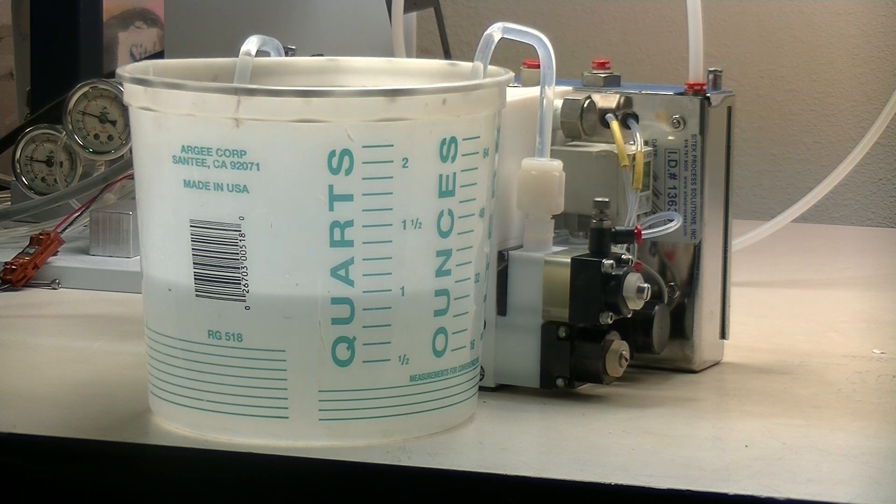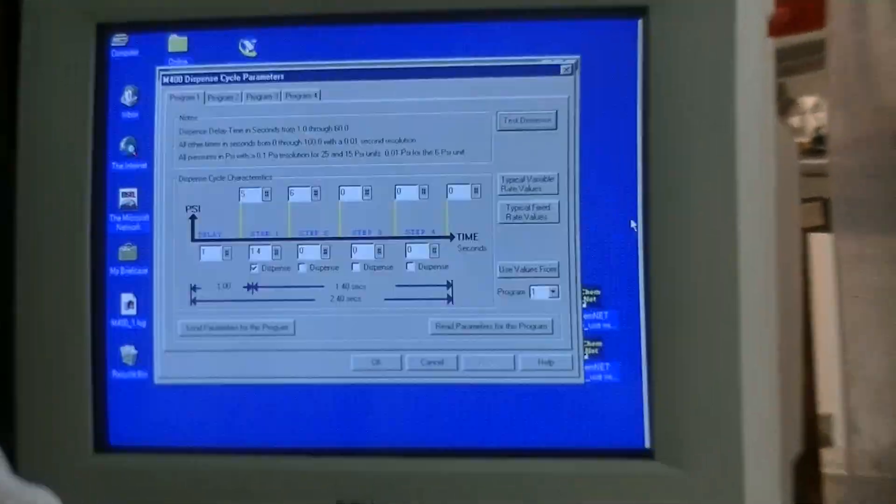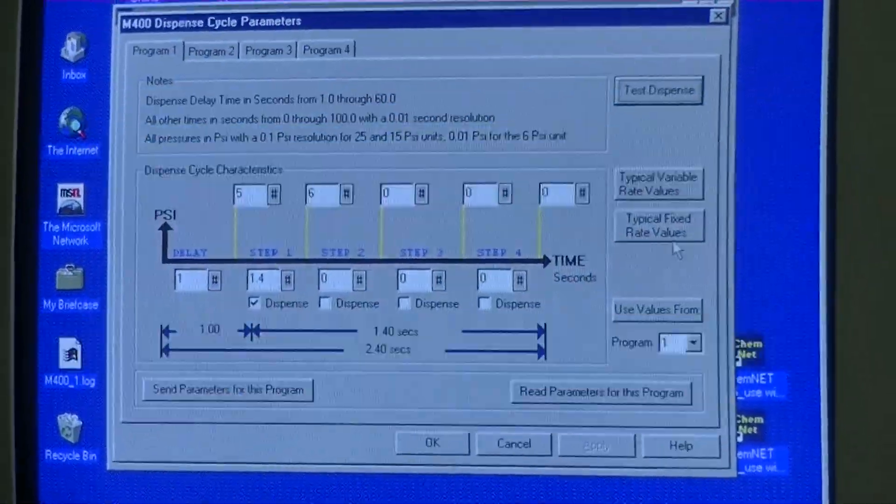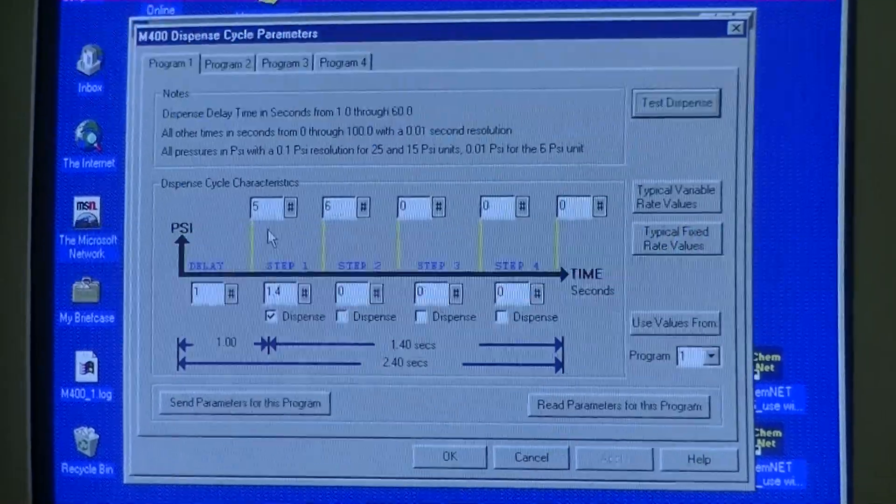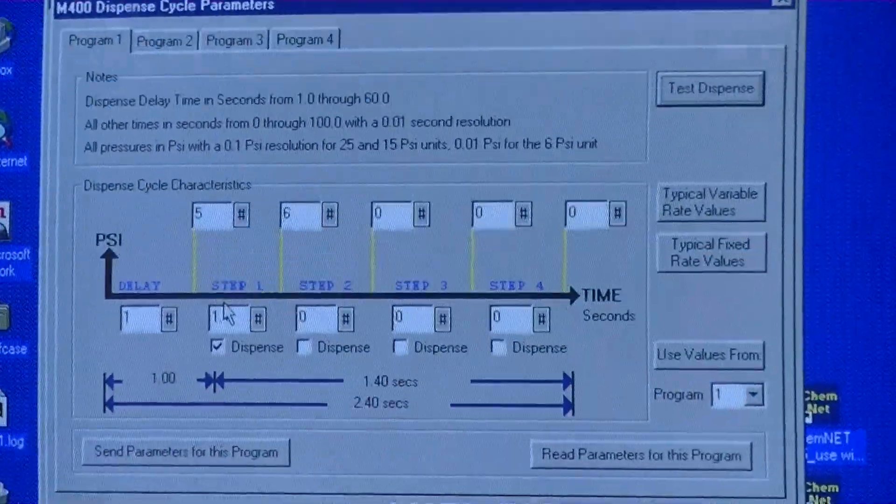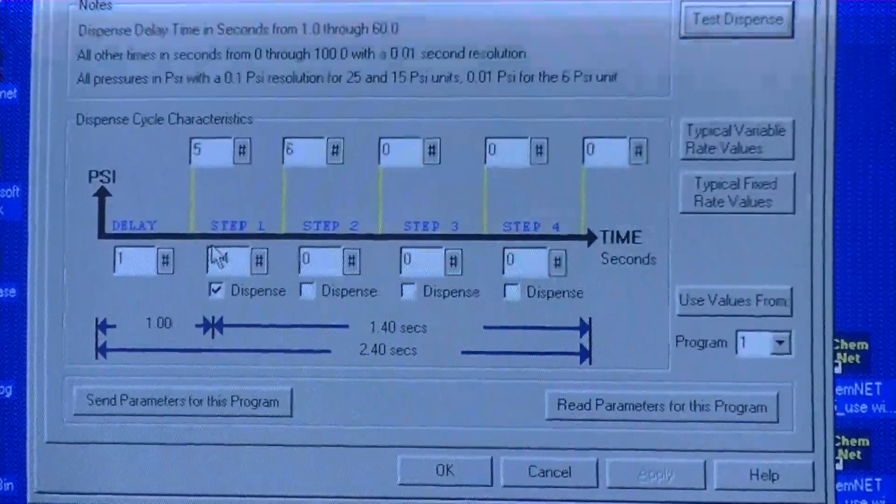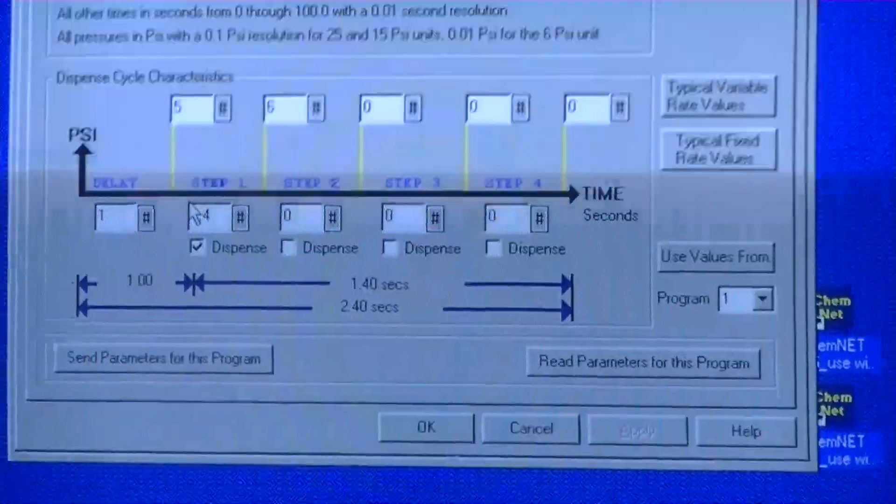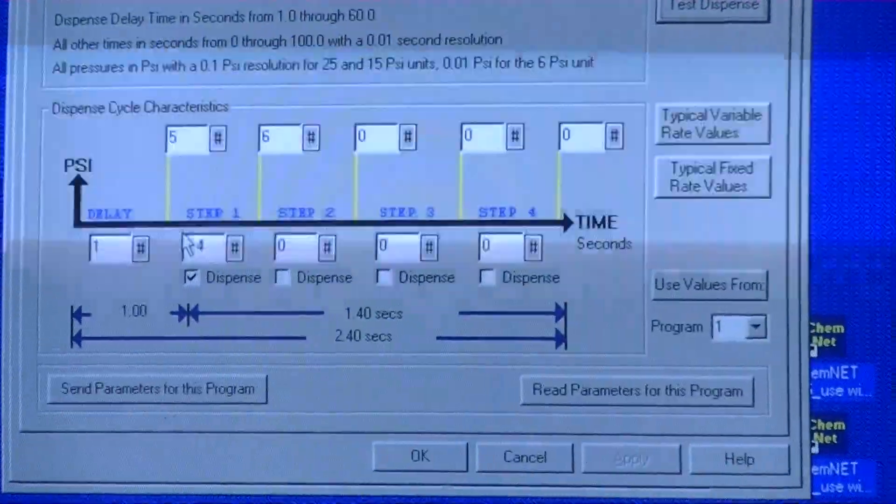We're going to go ahead and run this for you, and here we go. So we've got the ChemNet software, we're running Revision 4.5.1 for these newer pumps. This one handles the software that's on there. We have it set for 5 PSI dispense with a 1.4 second delay of the dispense, and this pump runs really well now.